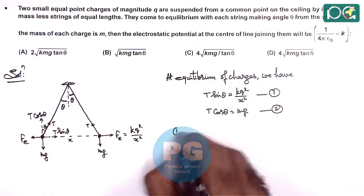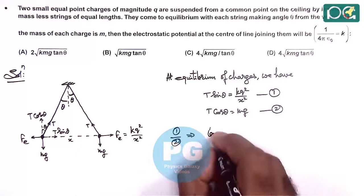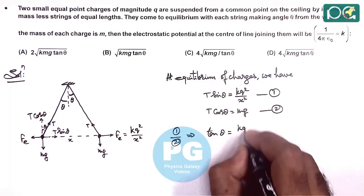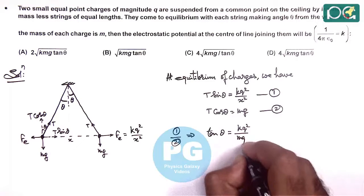We can divide the two equations, which gives tan theta equals Kq² by Mg x².